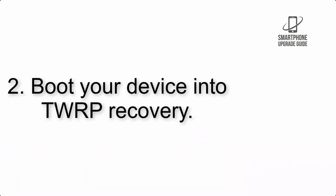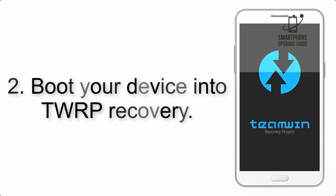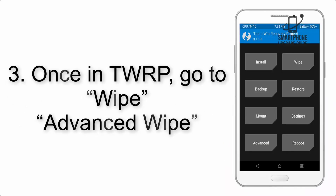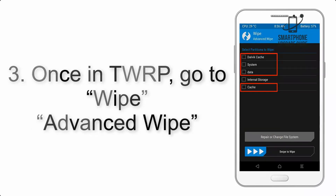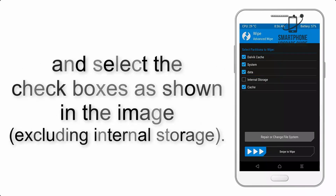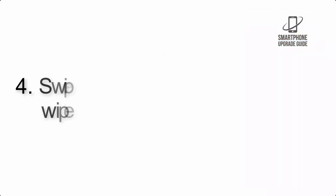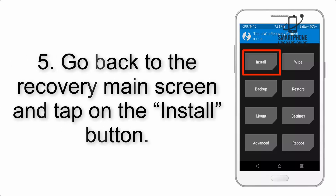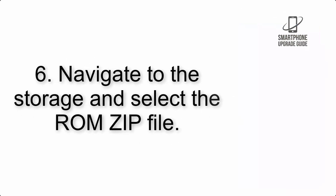Step 2: Boot your device into TWRP recovery. Once in TWRP, click on Wipe, then Advanced Wipe, and select the checkboxes as shown in the image, excluding internal storage. Step 4: Swipe the button to wipe the device.